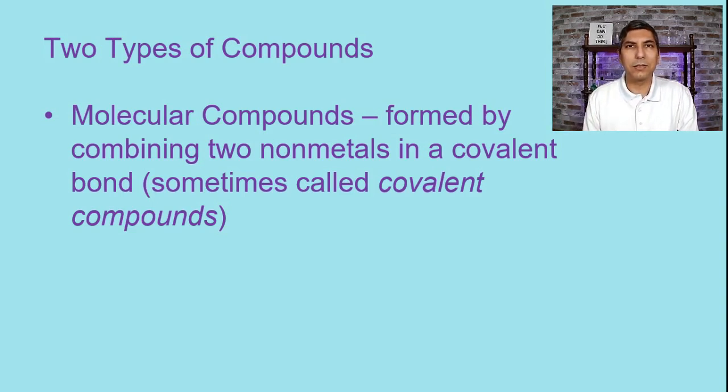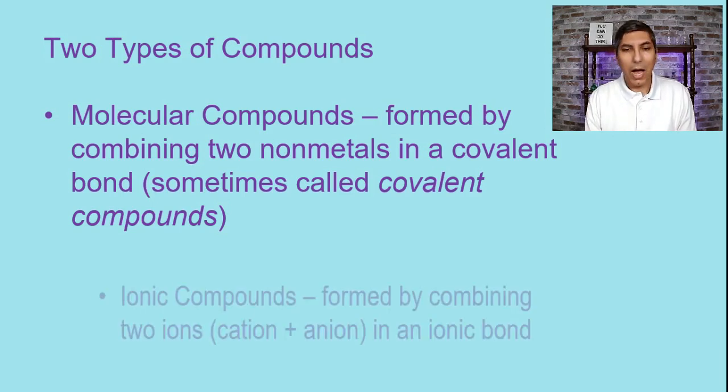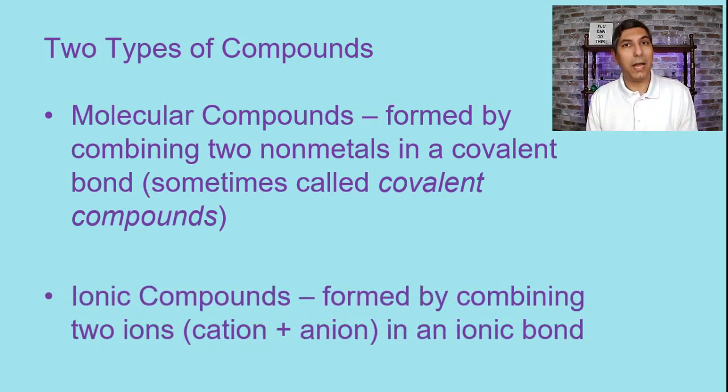Now sometimes molecular compounds are called covalent compounds. That's a pretty good name for those two because covalent compounds are formed from covalent bonds. Now ionic bonds make ionic compounds and as we learned in the last video an ionic bond is made from a metal and a non-metal. So when a metal and a non-metal combine to make an ionic bond, the compound that they make is going to be an ionic compound.